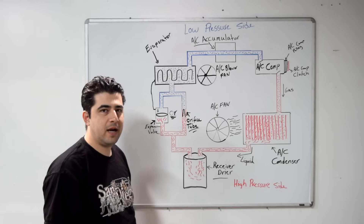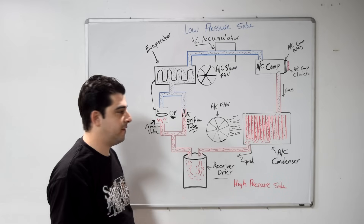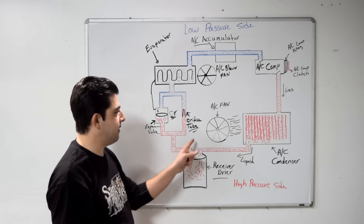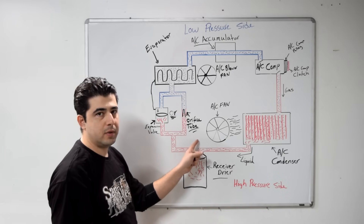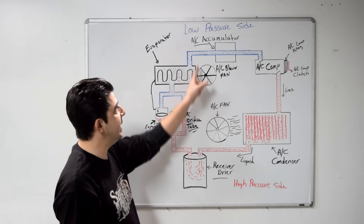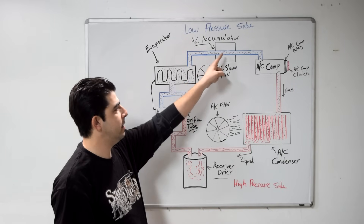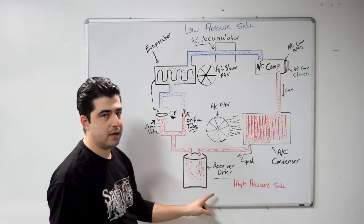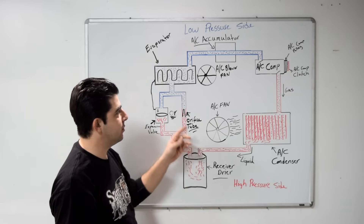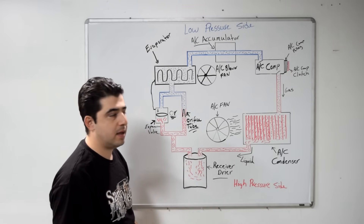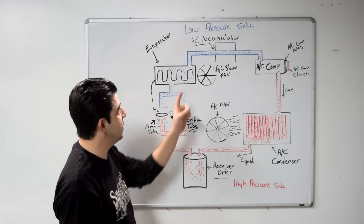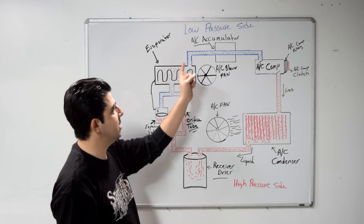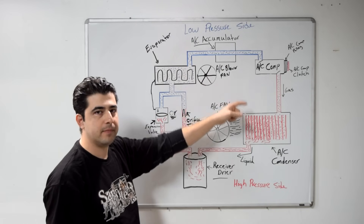One thing I forgot to mention: if your car has an orifice tube, you're going to have an AC accumulator instead of a receiver dryer. They both do pretty much the same thing, but your AC accumulator is going to be on your low-pressure side.